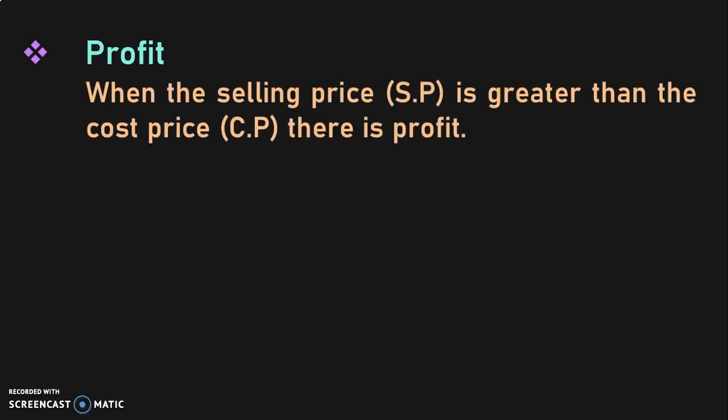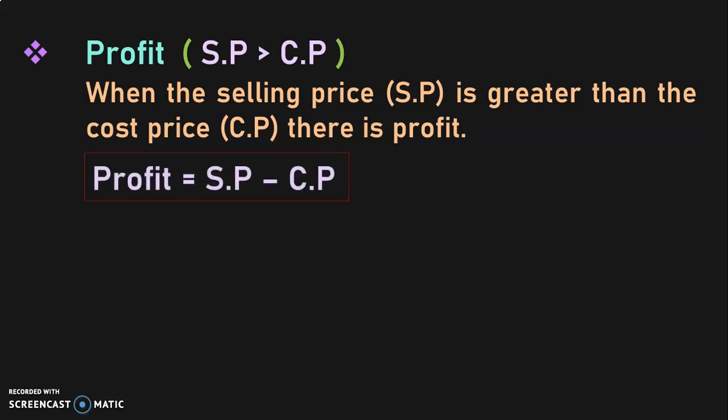Profit: when the selling price is greater than the cost price, there is profit. That is, the condition is SP (selling price) is greater than CP (cost price) — we will have profit in that transaction. The formula for finding profit is selling price minus cost price, SP minus CP.